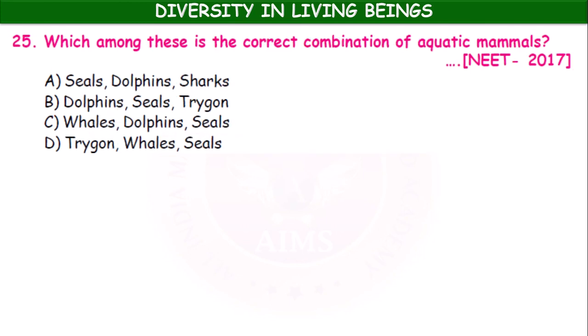Which is the correct combination of aquatic animals — seals and dolphins; sharks and dolphins; seals, trigon, and whales; or dolphins, seals, and whales? Whales, dolphins, and seals are all aquatic mammals.